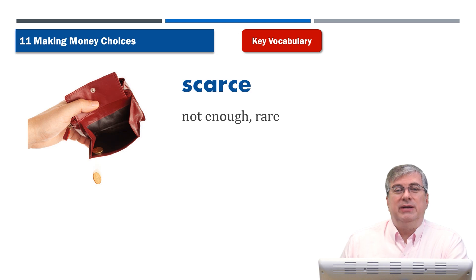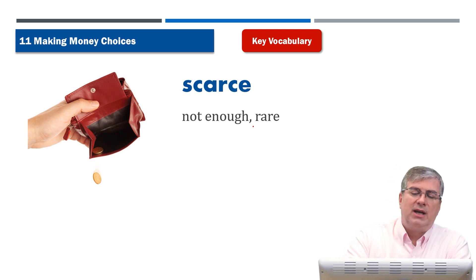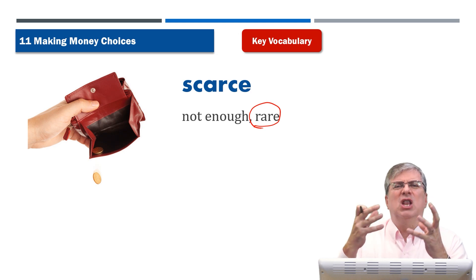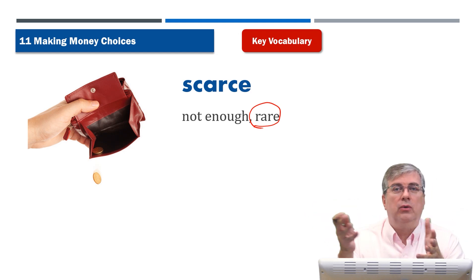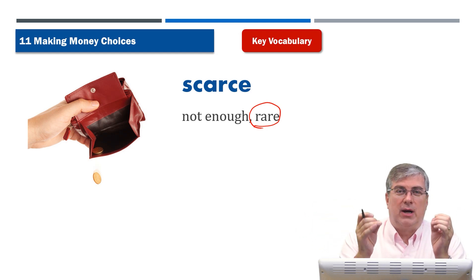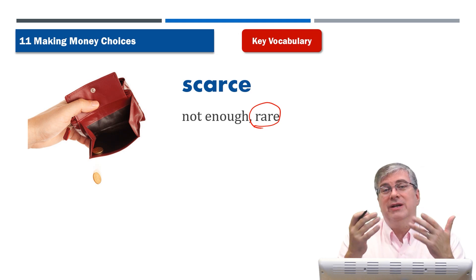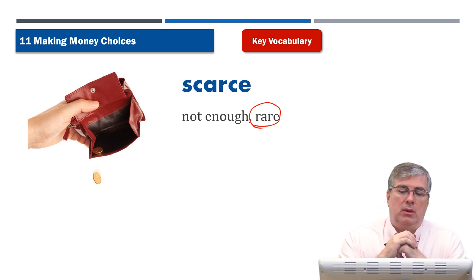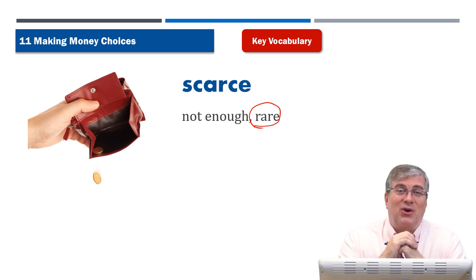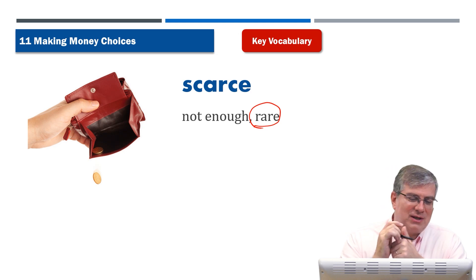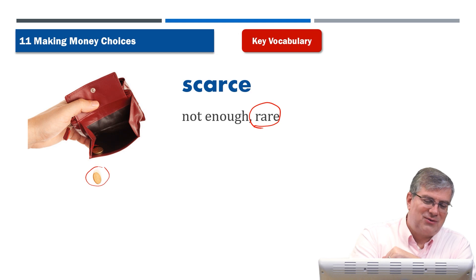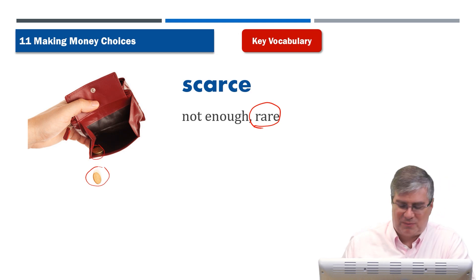'Scarce' means there's not enough of something, or it's rare — there's not a lot of it. For example, gold. There's not a lot of gold; you can't just go outside and find gold in the ground. Gold is very rare. It is scarce, and that's one of the reasons why it is so valuable. Also, money unfortunately is sometimes scarce. We have to earn it and be careful about spending it. Otherwise, as this picture shows, you can end up with no money left — just two pennies. Money is scarce for that person.